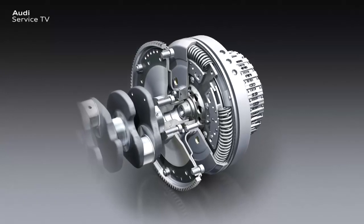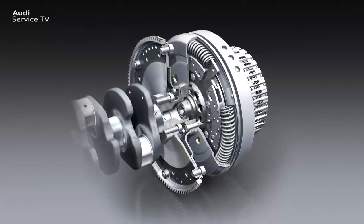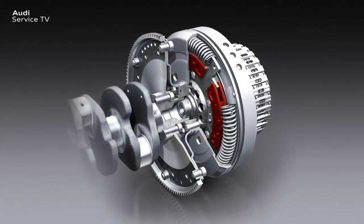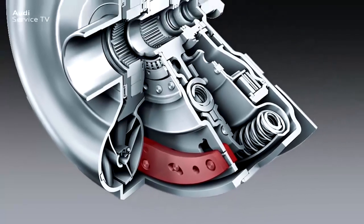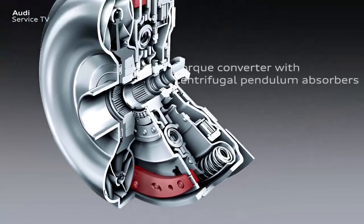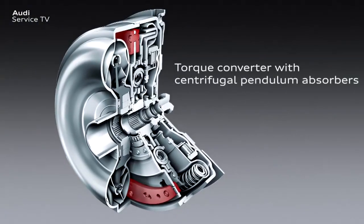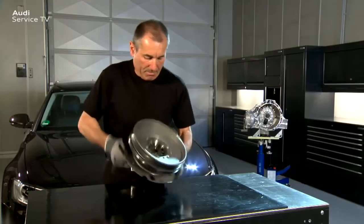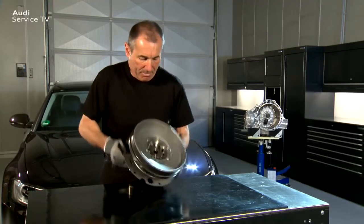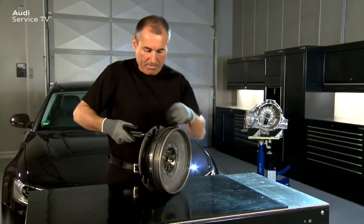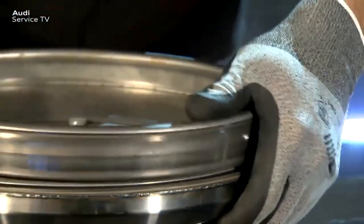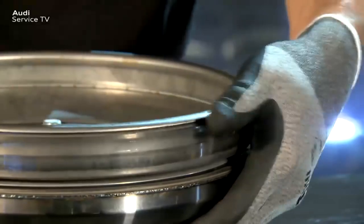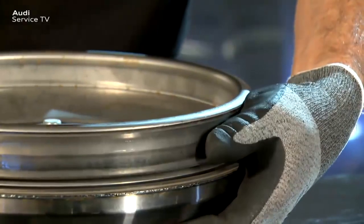Centrifugal pendulum absorbers are not used instead of the dual mass flywheel, but are integrated as an additional functional unit. The advantages of centrifugal pendulum absorber technology will in future also be used in torque converters in multi-ratio gearboxes. The noises emitted by the dual mass flywheel with centrifugal pendulum absorbers represent the best available technology and are no reason for complaint. Unfortunately, dual mass flywheels are frequently the subject of complaints due to these noises and are hence replaced needlessly. Please observe these notes when processing such complaints.